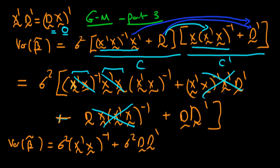So how do we compare this with the least squares estimator variance? It turns out that this first term here is exactly what we got from our least squares estimator — this is just the variance of the least squares estimator.